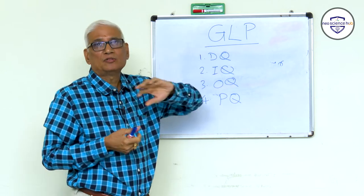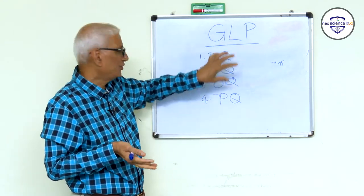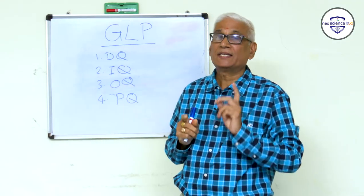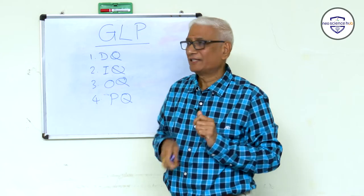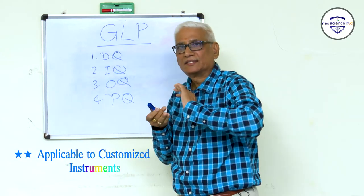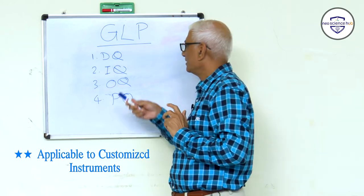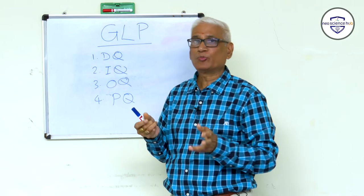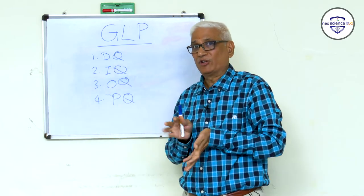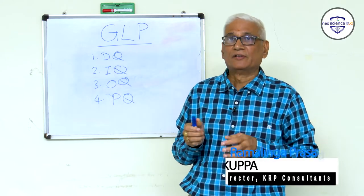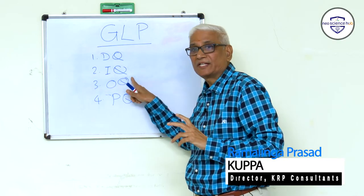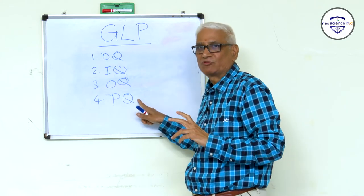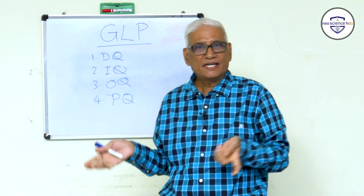The design qualification (DQ) describes how the equipment is designed and should be approved before installation qualification. Installation qualification covers how the equipment is installed in a suitable laboratory environment. Operational qualification checks whether the equipment operates as designed. Once these three are done, a complete analysis is performed using performance qualification, after which the equipment is ready for use in the lab.